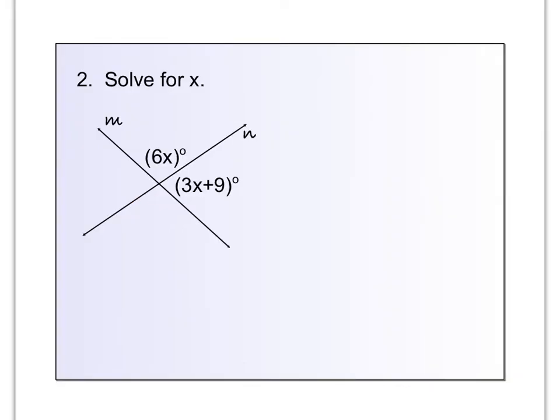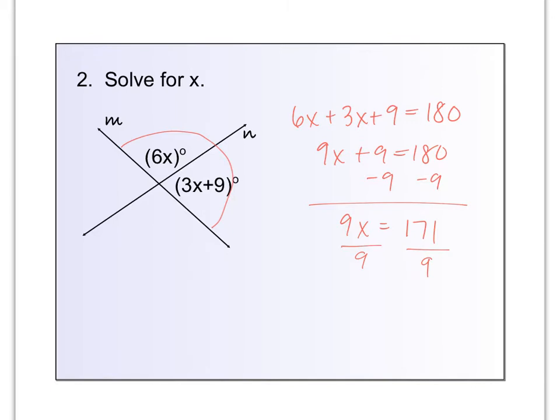Take a minute and imagine how would you set up number 2. You are going to have to set up an equation. Are they equal to each other or do they add up to 180? If you are thinking these two angles are a linear pair, they should add up to 180 degrees. So 6x plus 3x plus 9 equals 180. 9x plus 9 equals 180. Subtract your 9. So we have 9x equals 171. And you might need a calculator for this. I'm going to type it in really quick. 171 divided by 9, it is a nice number. X is 19.